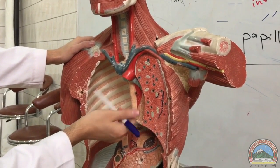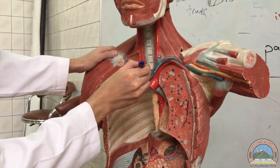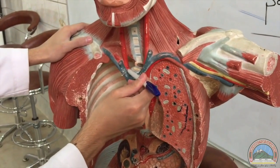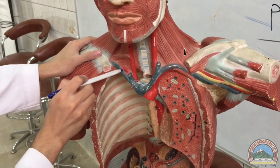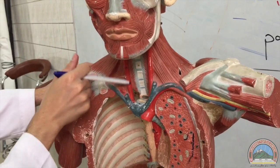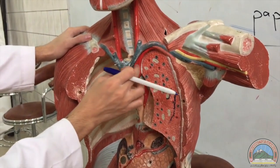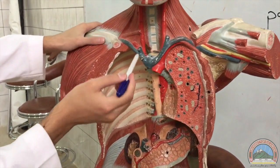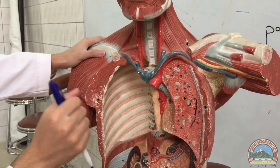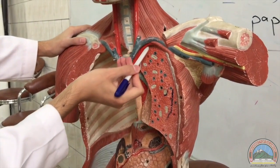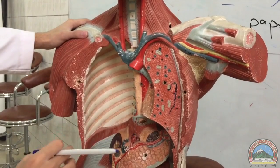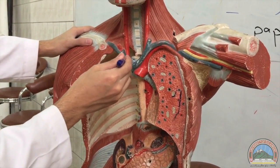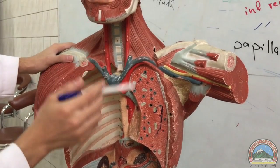From the arch of aorta, we have some branches. Firstly, we have the brachiocephalic artery on the right side, which has two branches: the right subclavian artery and the right common carotid artery. From the left side of the arch of aorta, we have two branches: the left subclavian artery and the left common carotid artery. So the left subclavian and left common carotid arteries branch directly from the arch of aorta, whereas the right subclavian and right common carotid arteries branch from the brachiocephalic artery, which itself branches from the arch of aorta.